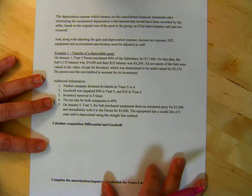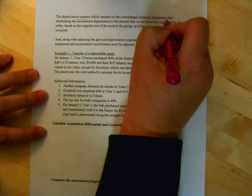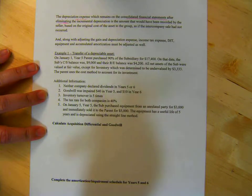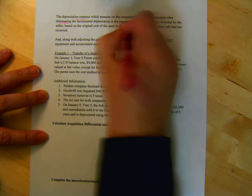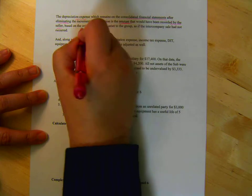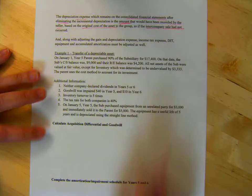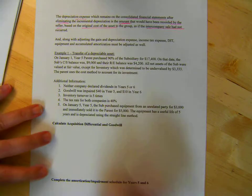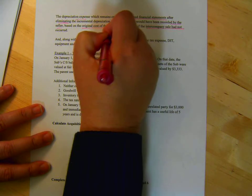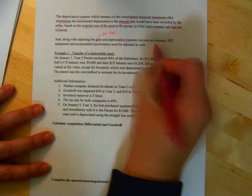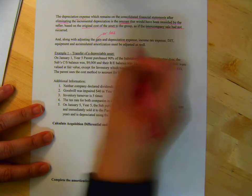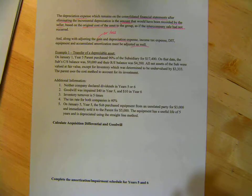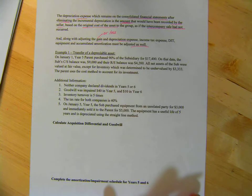So, moving on to page 2. The depreciation expense remains on the consolidated financial statements after the elimination of that incremental is the amount that would have been recorded by the seller based on the original cost of the asset as if the intercompany sale had not occurred. We did that with inventory, we did that with land. Now, we're going to do it with depreciable asset. Now, of course, along with adjusting the gain and depreciation expense, or loss, income tax expense, DIT, and accumulated amortization or depreciation have to be adjusted as well.